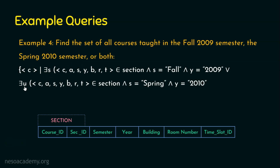For the second condition involving Spring 2010, I use a new set of domain variables — let's call them c, a, u, y, b, r, t — where u replaces s for semester to avoid collision. The condition is u equals 'Spring' AND y equals 2010. Whatever c retrieves for the first sub-formula will be Fall 2009 courses; the second sub-formula gives Spring 2010 courses. Using OR means the output contains Fall 2009 results, Spring 2010 results, or both. Here is the answer for example number four.